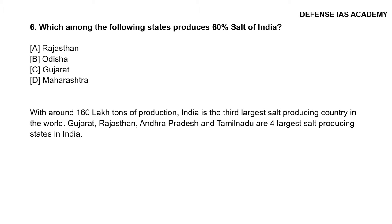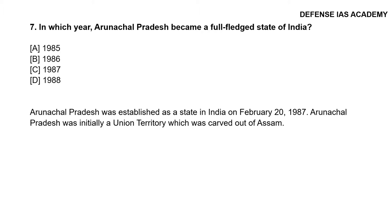Question 6: Which among the following states produces 60% of India's salt? The correct answer is option C, Gujarat. With around 160 lakh tons of production, India is the third largest salt producing country in the world. Gujarat, Rajasthan, Andhra Pradesh and Tamil Nadu are the four largest salt producing states in India.